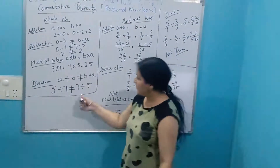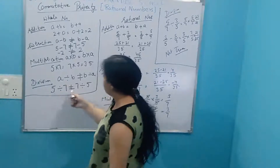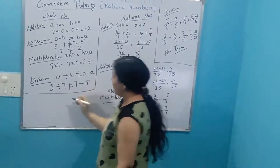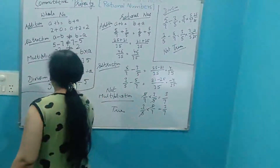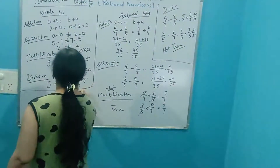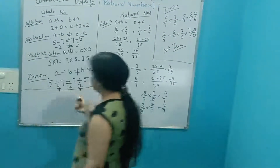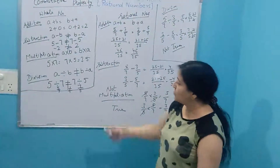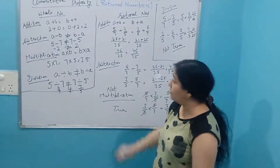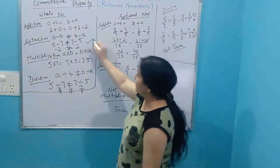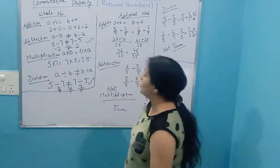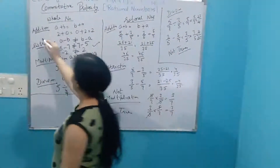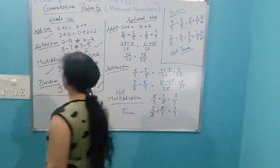Division: 5 divided by 7 gives 5 by 7, while 7 divided by 5 gives 7 by 5. Five by seven and seven by five are different numbers, so under division it is not true. Subtraction and division cases are not true, while addition and multiplication cases are true.